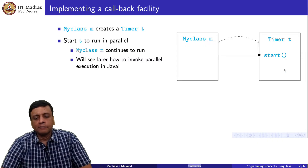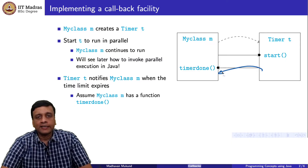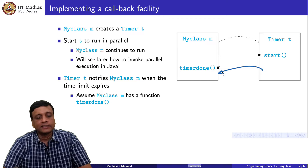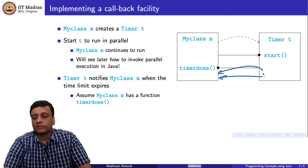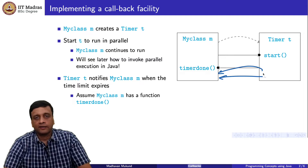When the time elapses, the timer has to come back and tell the class that it is done. It has to in turn come back and call a function. We have to assume that the class which created the timer implements some kind of function which is callable by the timer. The timer knows it should go back to the calling class — the class that created it — and call a function called timer done. Timer done will have some code which my class will execute, indicating that it is aware of the timer having elapsed and whatever it needed to do after. This is the kind of scenario we want to program, and this is called a callback. We create an object, run it in parallel, and expect that parallel object to call us back when it is done.